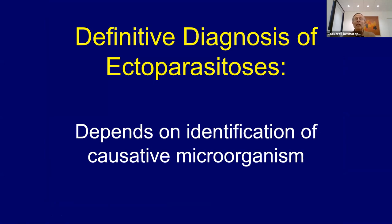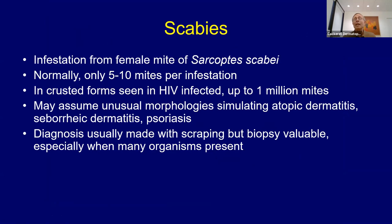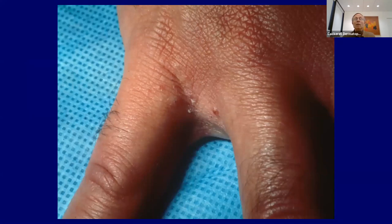Scabies: normally in a scabietic infection you have about five to ten mites per infestation, but in an HIV-infected patient you can see up to a million mites — Norwegian or crusted scabies — which can look like atopic dermatitis or psoriasis, which is why the diagnosis is often missed. Diagnosis is usually made by scraping; occasionally biopsy is helpful. Classic intertriginous lesions are well known, but in HIV-positive patients you can get widespread eruption that doesn't look like classic scabies with the expected burrows.